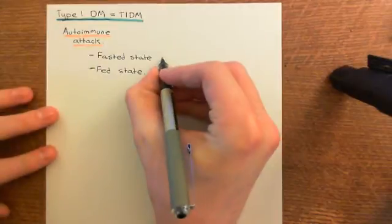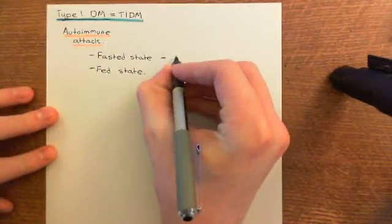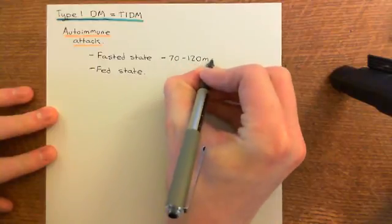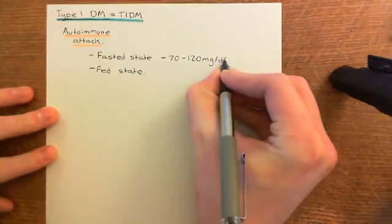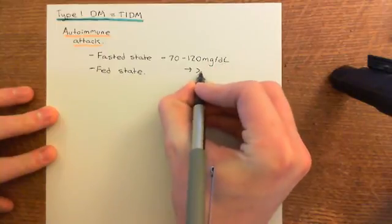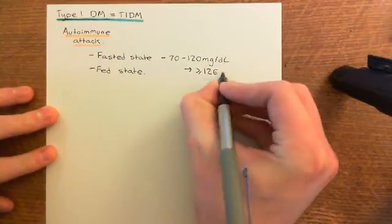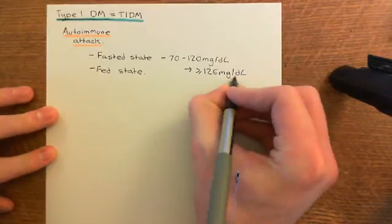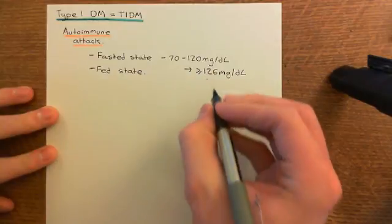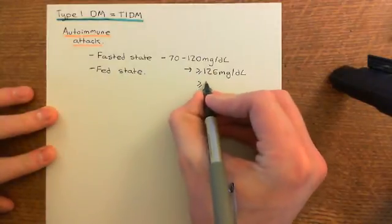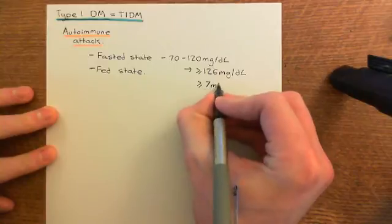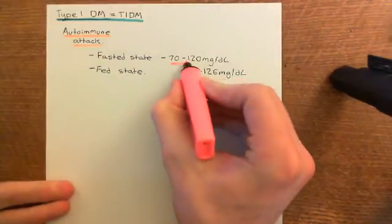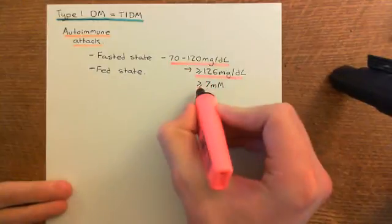Therefore you're going to end up with hyperglycemia. Your fasting blood glucose concentration, rather than being between 70 and 120 milligrams per deciliter, is instead going to be greater than or equal to 126 milligrams per deciliter — which was the cutoff value for the diagnosis of diabetes. That's equivalent to greater than or equal to 7 millimolar. So you're going to get hyperglycemic fasting glucose levels within the blood.